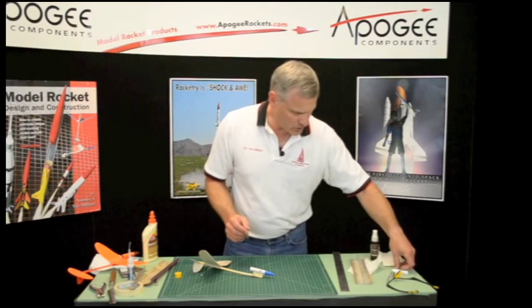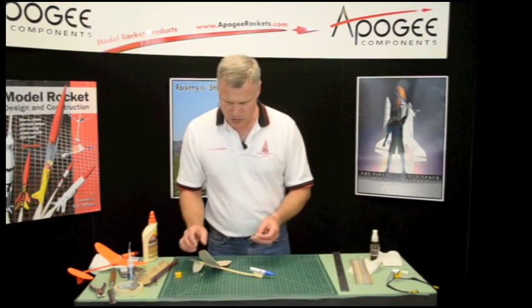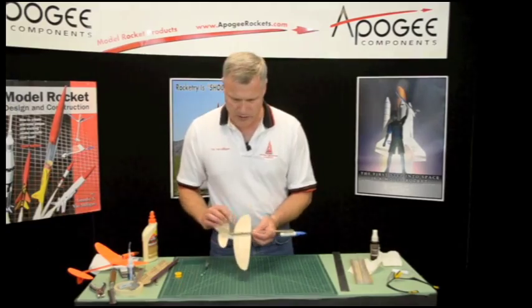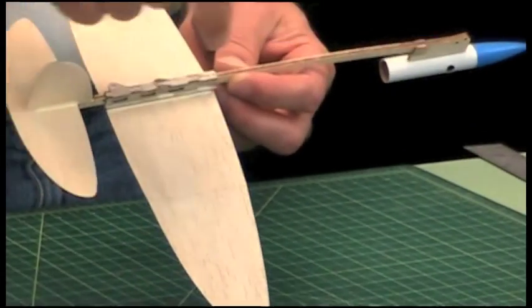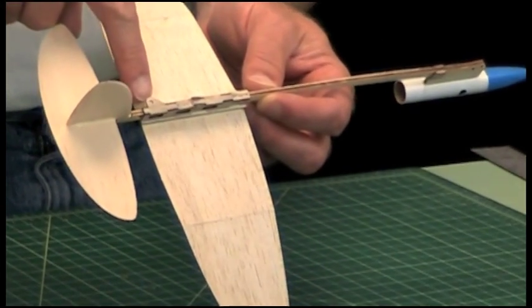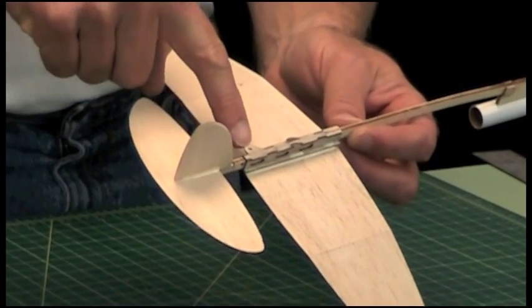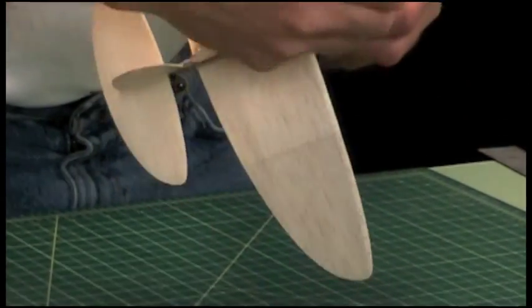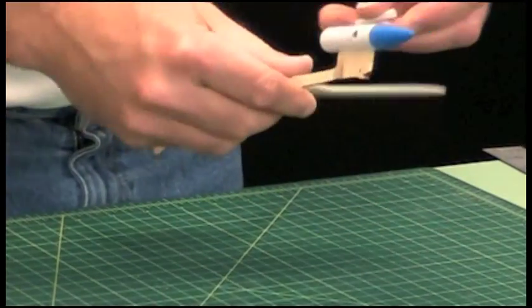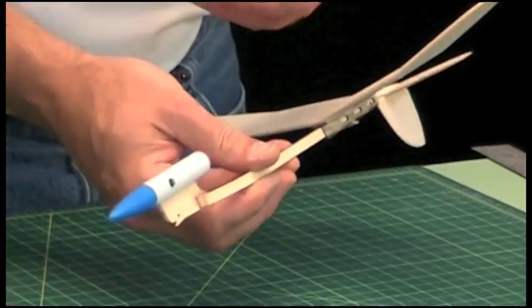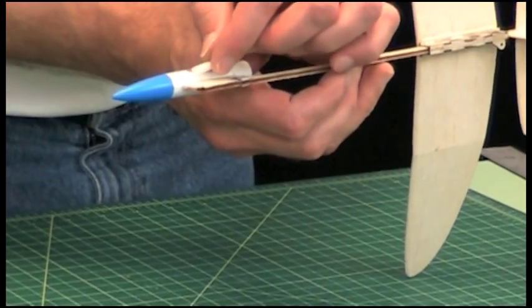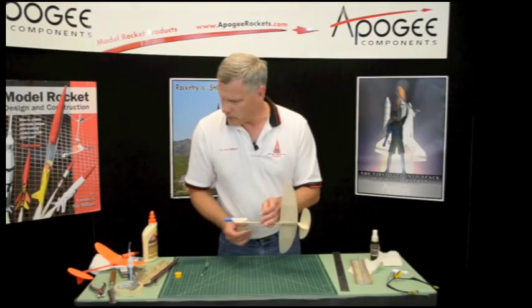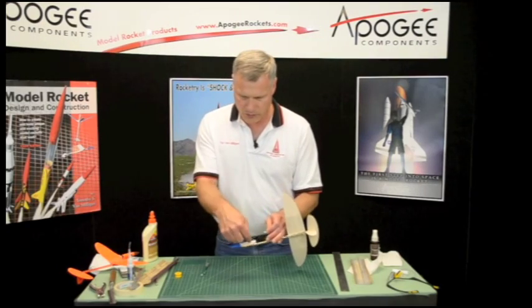And then we're going to take our launch lug. Now the launch lug goes on the opposite side of the boom as the little string tie down. So you've got the tie down on the right side. So the launch lug is going to go on the left side. And we're just going to glue it right in the middle of that joint.